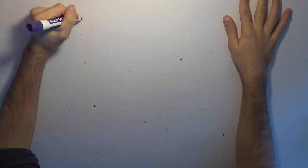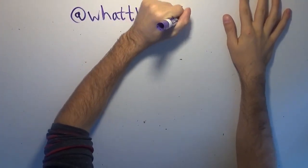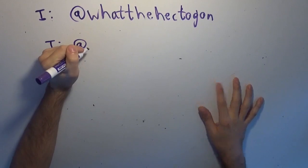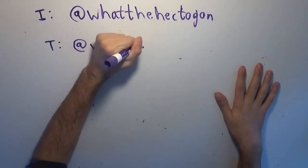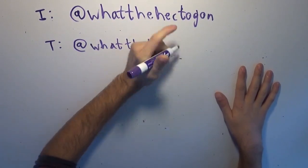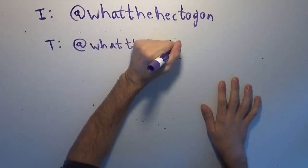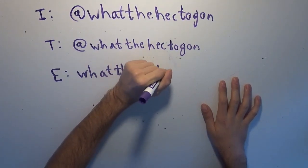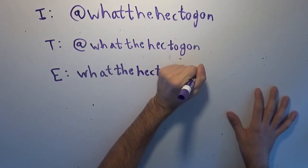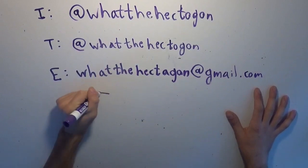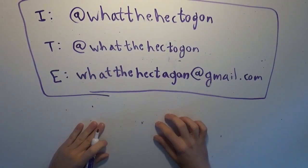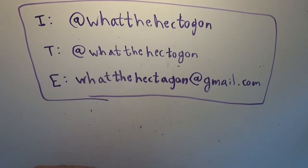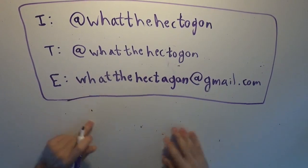The channel has an Instagram and a Twitter, both at whatthehectagon. The email is the incorrectly spelled whatthehectagon at gmail.com — why spell-check before you make the email that you can't then change? All of these are in the description, along with other Instagram, Twitter, and YouTube accounts that me and my friend Bill run. He does one for D&D, and we together stream on Mixer under the moniker Fred Wood Live.